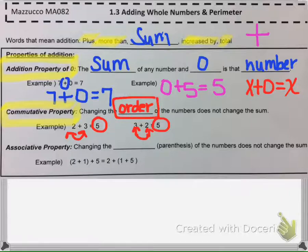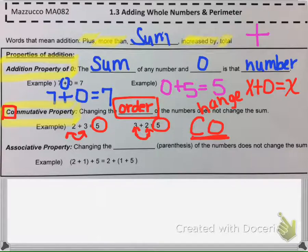Now I remember this property means changing order because commutative property starts with a C and an O. Those are the two first letters. So it helps me remember C for change and O for order.